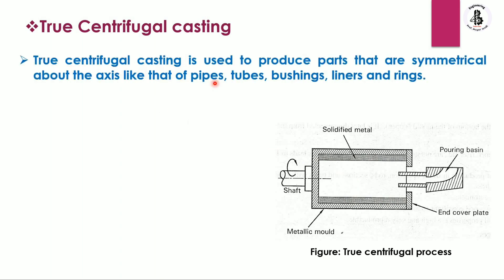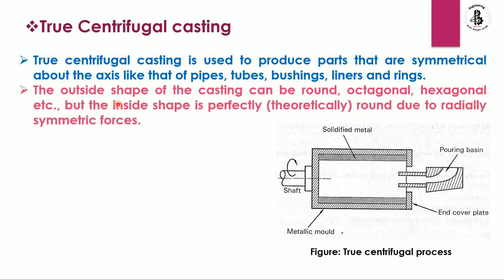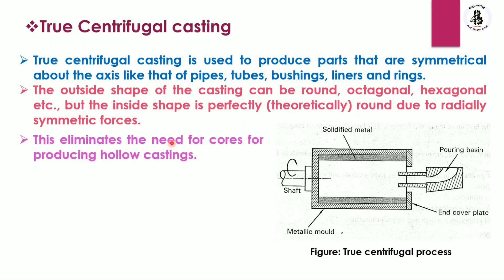True centrifugal casting is used to produce parts that are symmetrical about an axis, such as pipes, tubes, bushings, liners, and rings. The outside shape of the castings can be round, octagonal, or hexagonal as per requirements, but the inside shape is perfectly round due to the radially symmetrical centrifugal force. This eliminates the need for cores for producing hollow castings, which is the major advantage of the true centrifugal casting process.